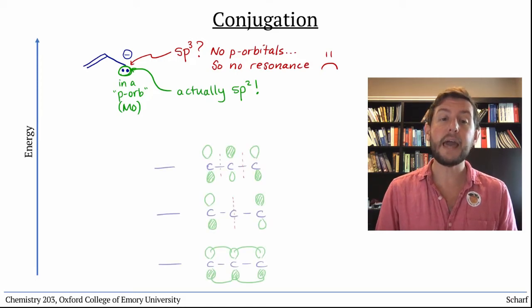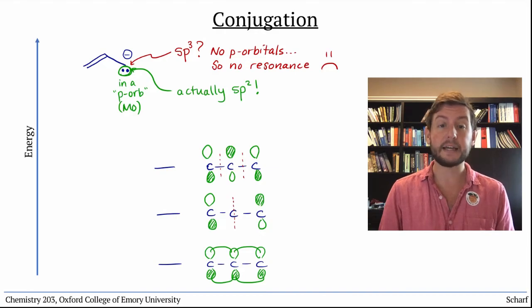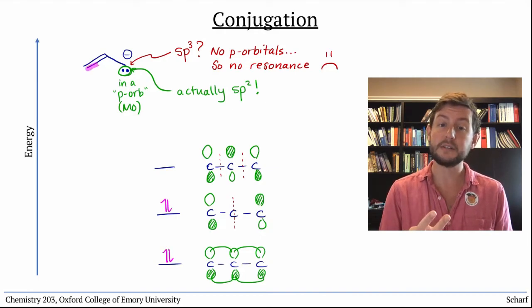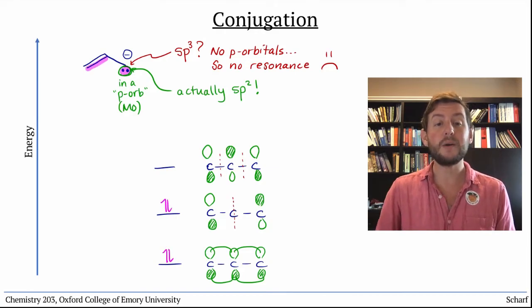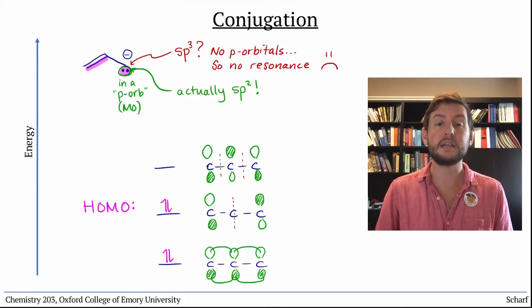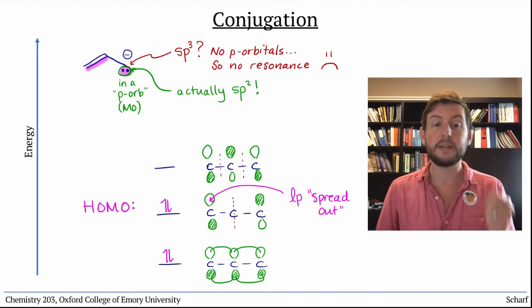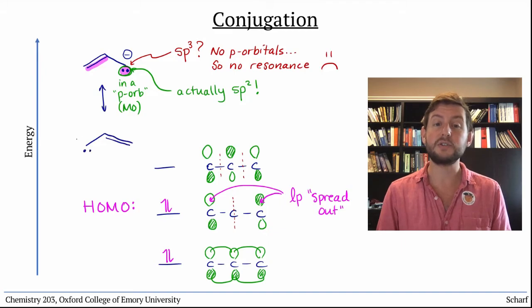If we look at the MO diagram, which is the same as the allyl cation, just with two extra electrons, we can see that the HOMO is this orbital. A single pair of electrons that's spread out, half on this carbon, half on the other. Just like the two resonance structures imply.